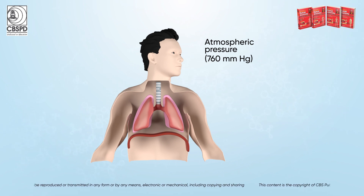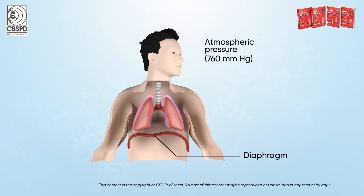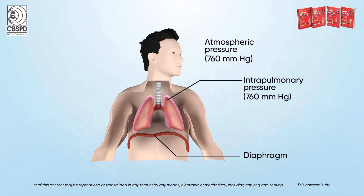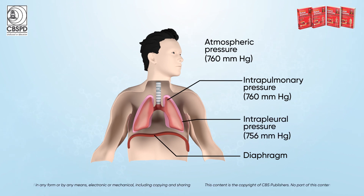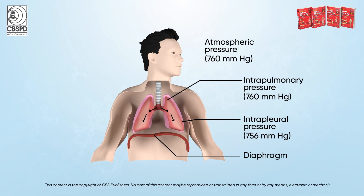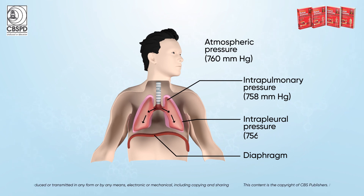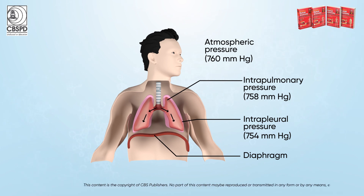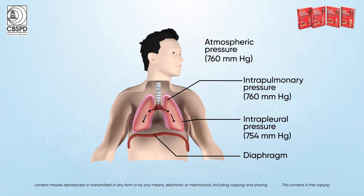Atmospheric pressure is 760 mmHg throughout. Before inspiration, intrapulmonary pressure is also 760 mmHg and intrapleural pressure is 756 mmHg. At the beginning of inspiration, intrapulmonary pressure decreases to 758 mmHg and intrapleural pressure decreases to 754 mmHg. At the end of inspiration, intrapulmonary pressure returns to 760 mmHg and intrapleural pressure is 758 mmHg.